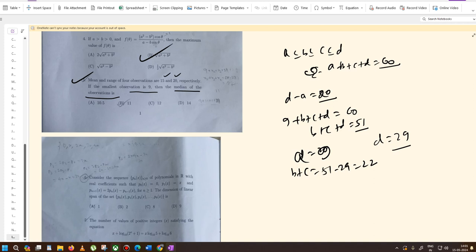For four values, the median is the average of the middle two values. So b + c = 22, and the median is 22 by 2, which gives us 11. So 11 is the answer.